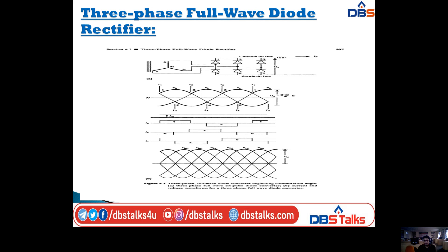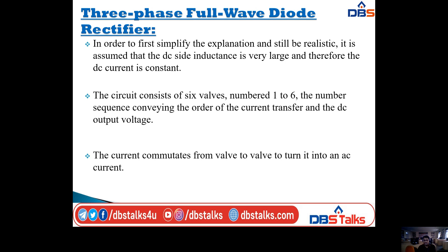To simplify the explanation and remain realistic, it is assumed that the DC side inductance is very large and therefore the DC current is constant. The circuit consists of six valves numbered one through six. The numbering sequence conveys the order of current conduction, transformer current, and DC output voltage. Current commutates from valve to valve — from diode to diode — turning the DC current into an AC current.